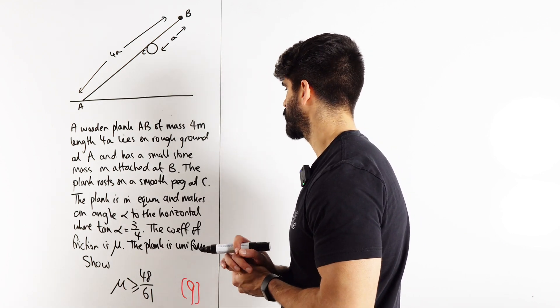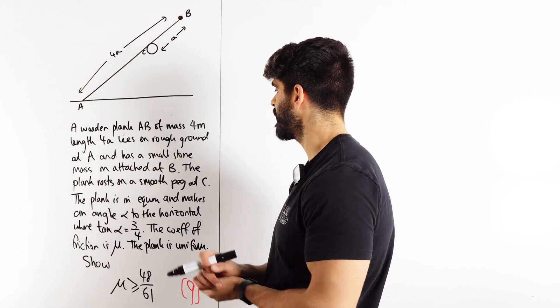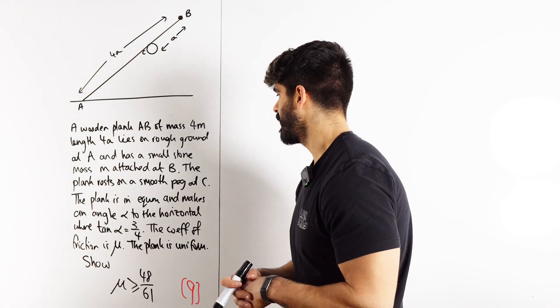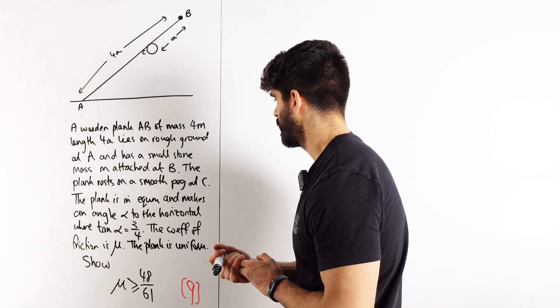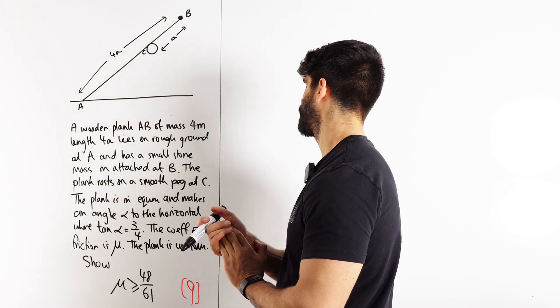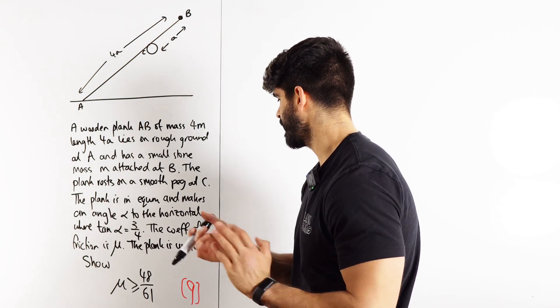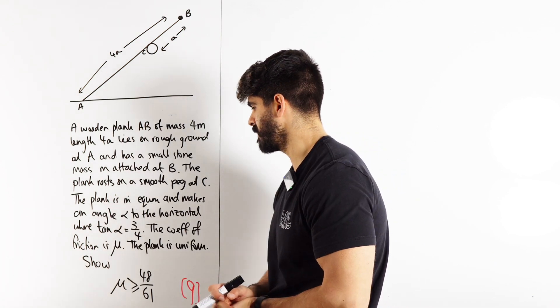The plank rests on just a smooth peg at C. The plank is in equilibrium and makes an angle alpha to the horizontal where tan alpha is 3 over 4. The coefficient of friction is mu. The plank is uniform. Show that this inequality is true.